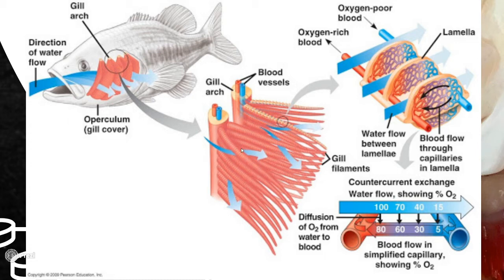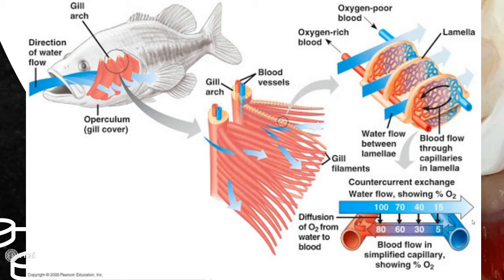What's happening here is that the blood flow is in the opposite direction of the water. This is called counter-current exchange, or counter-current flow, and it increases the ability of the oxygen to transmit through the membrane into the blood. That's how fish breathe underwater in a nutshell — they're able to absorb the oxygen that's in the water through their gills into their bloodstream, just the same way we do it with our lungs.